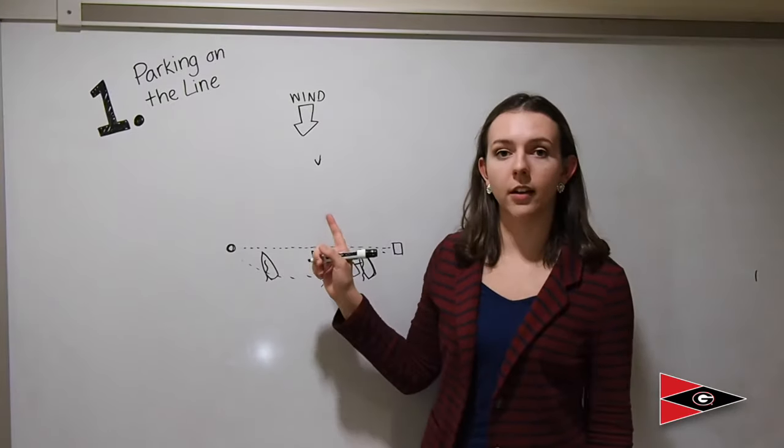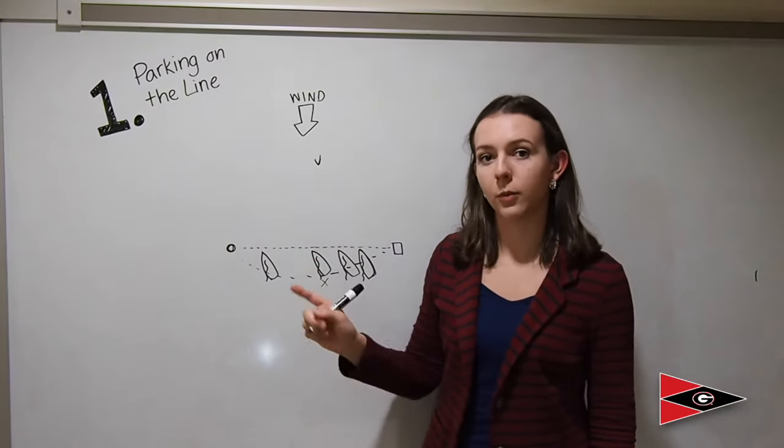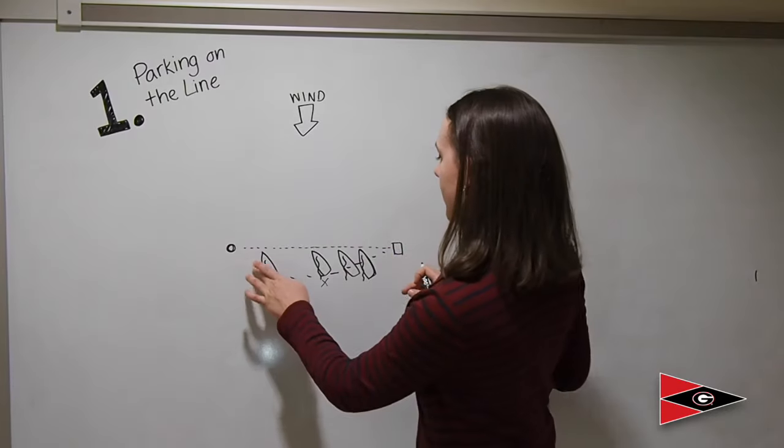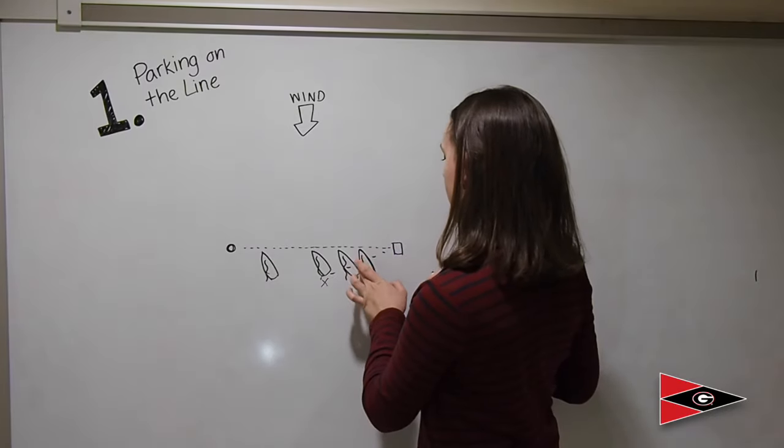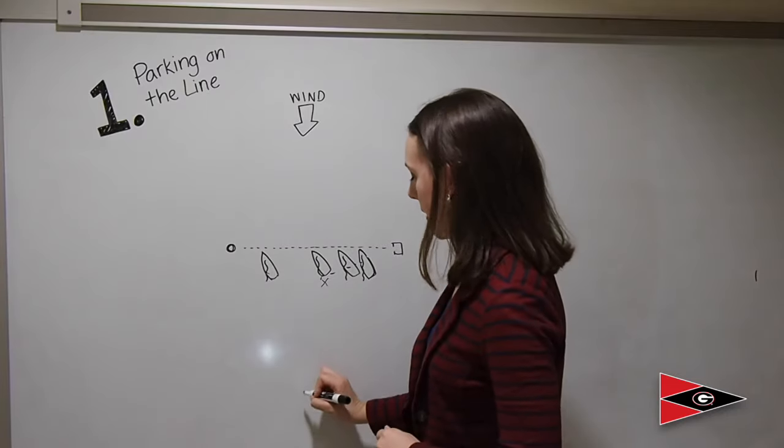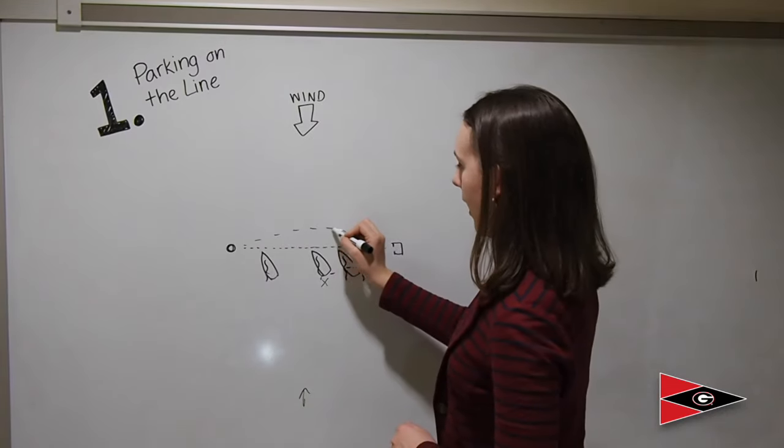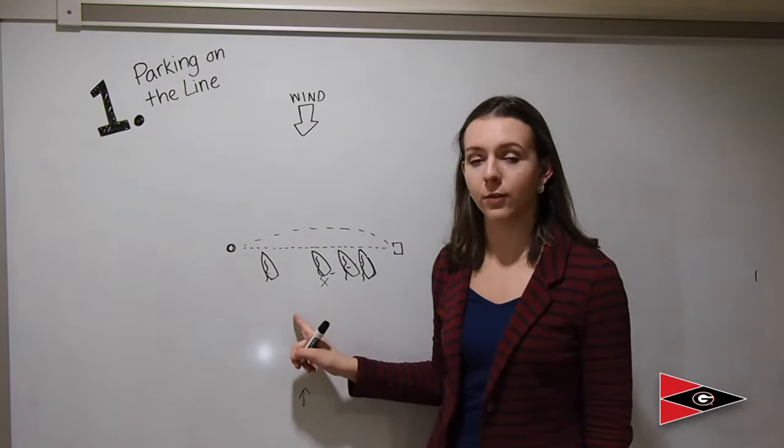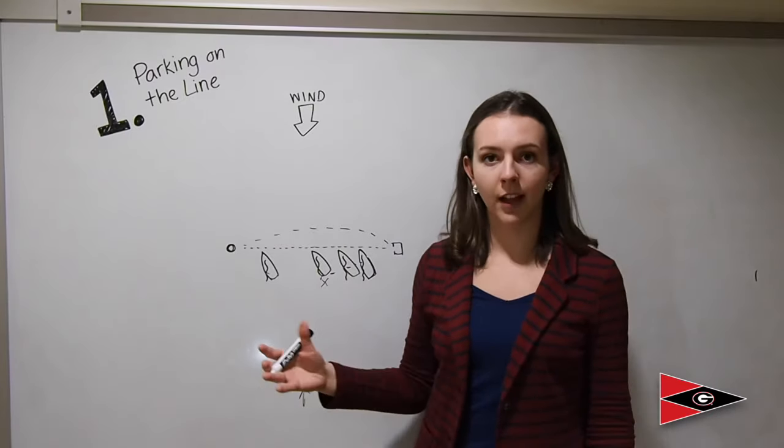You'll want to set up parking a lot higher than you think you would because the current will push you down. Vice versa, if the current is coming from behind there's a line bulge and you'll want to set up much further down than you expect because it will push you above the line.